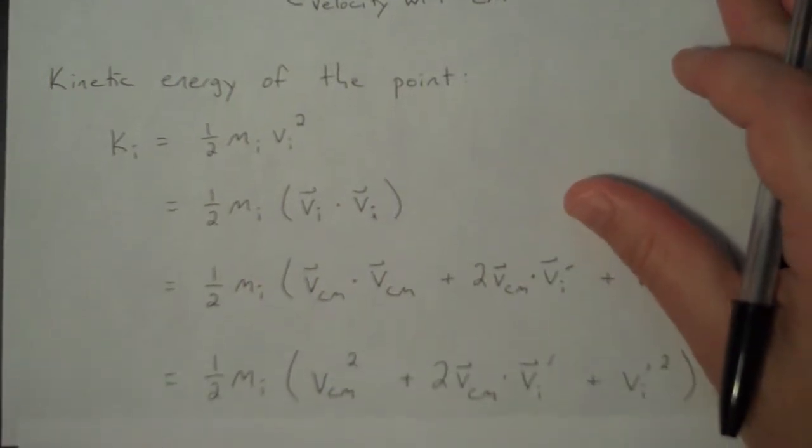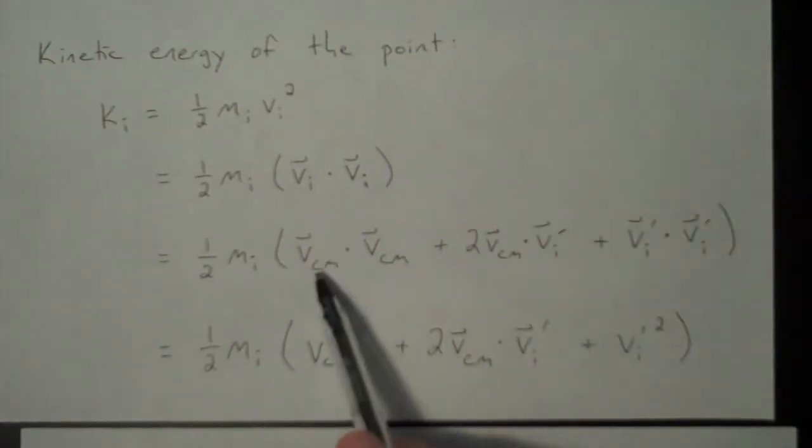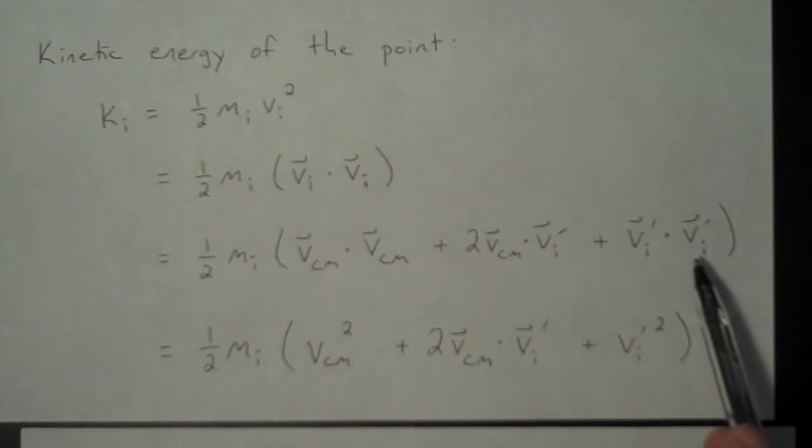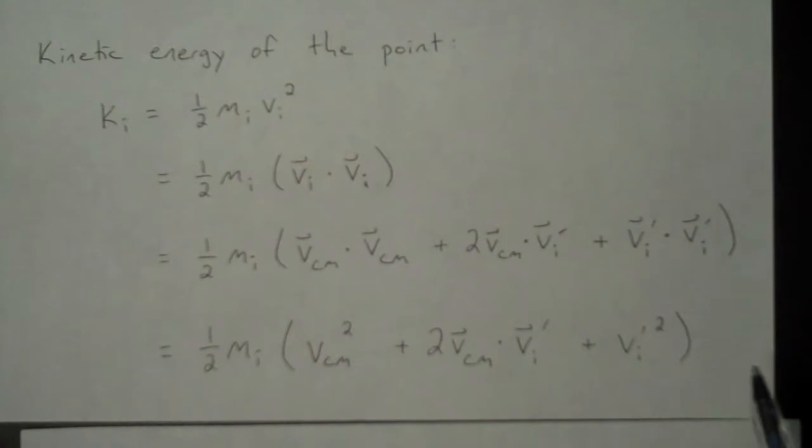And after doing essentially a foiling process, I get this long expression. And to simplify that just a little bit more, this VCM dotted with VCM is just VCM squared, and this vi prime dotted with vi prime is just vi prime squared.